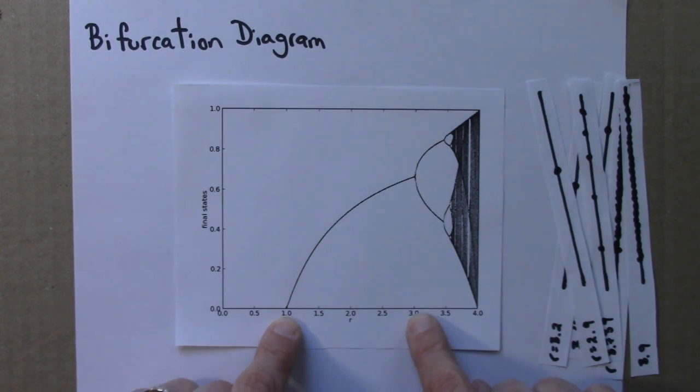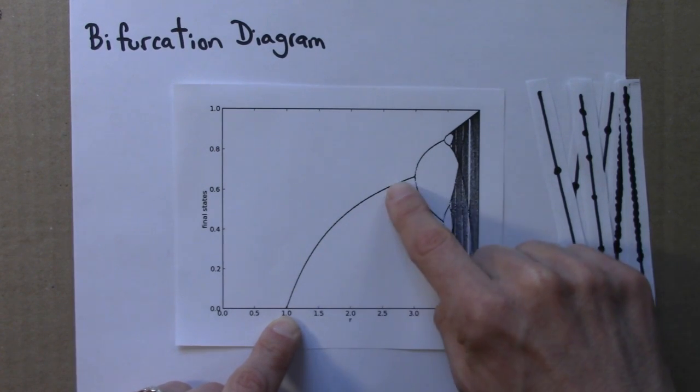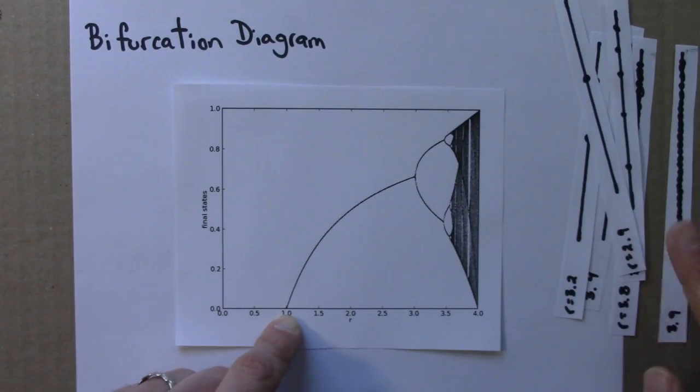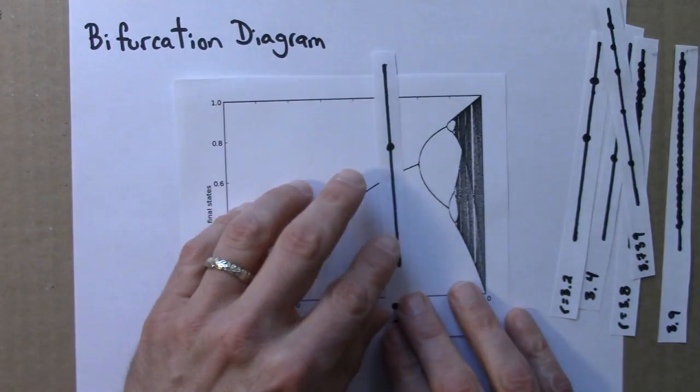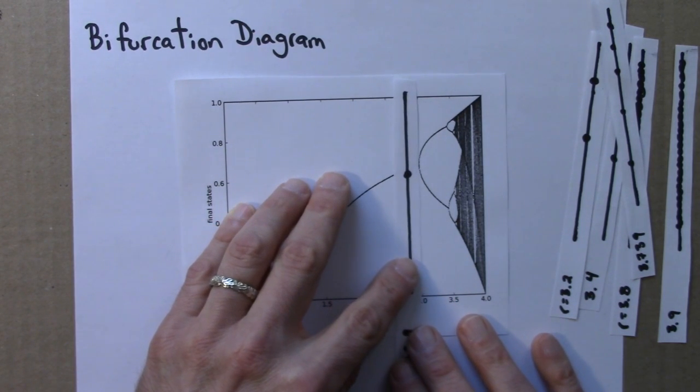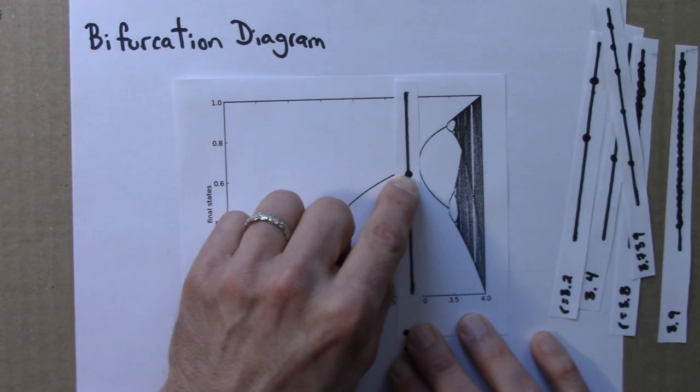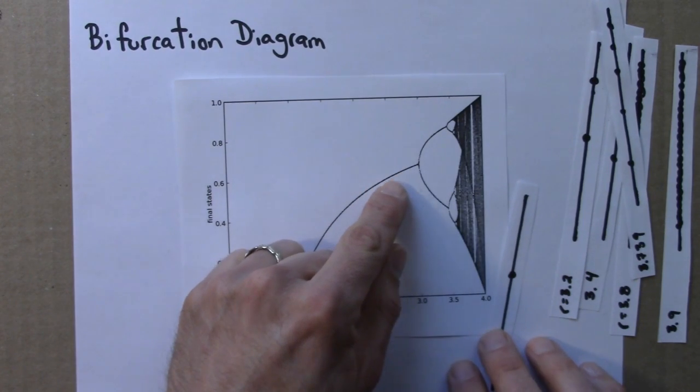Between 1 and 3, there's an attracting fixed point. And in fact, we saw that, let's see, we did 1 for 2.9. Here it is. Let's see if this is going to work. Close. Okay, so 2.9, that's about there. And this dot that I drew in the first example is part of this line here.